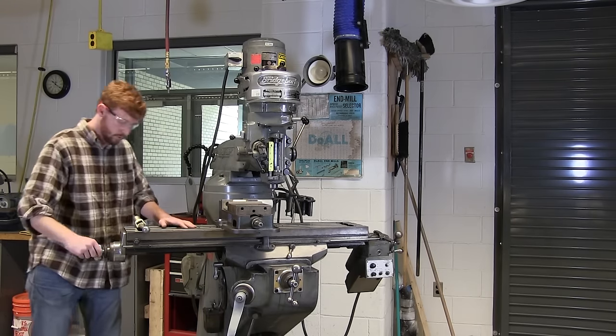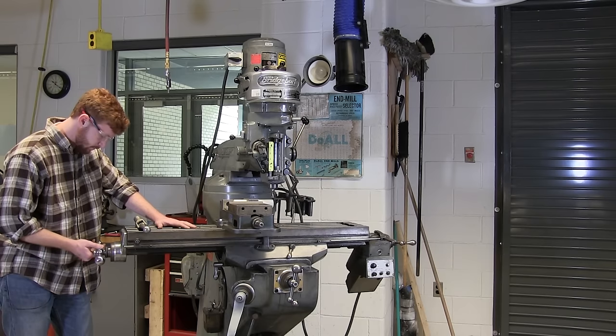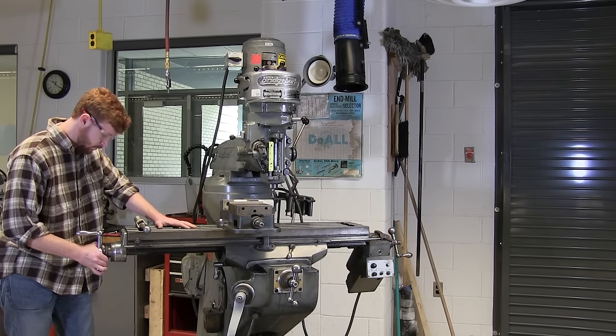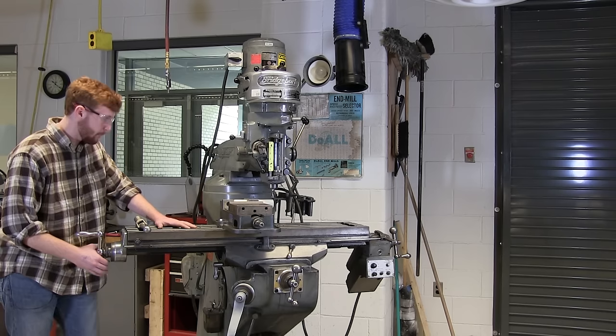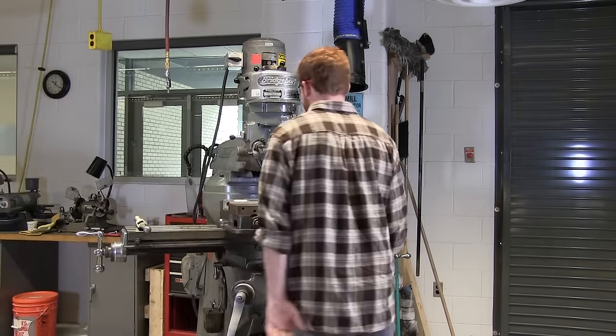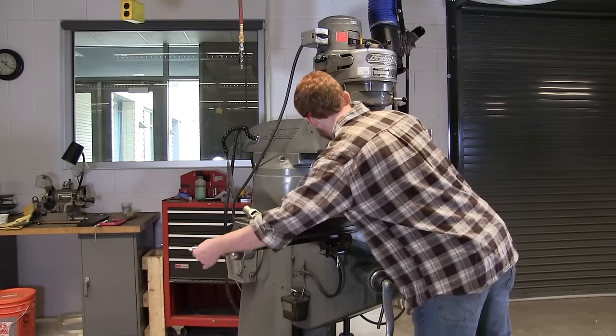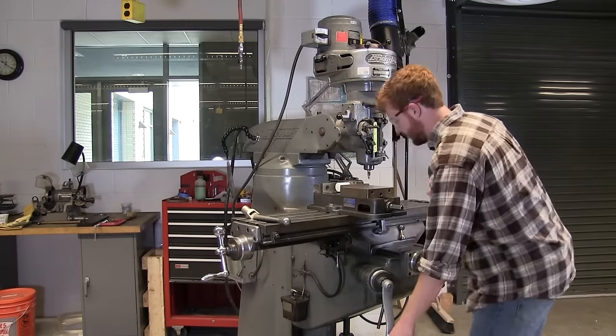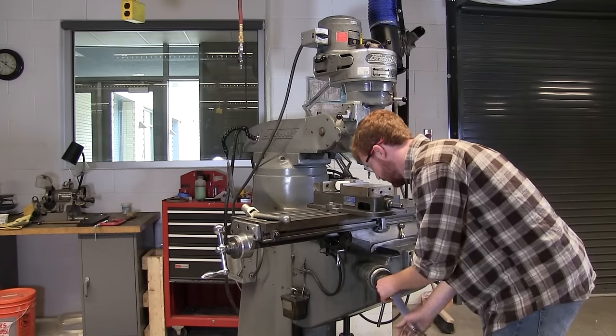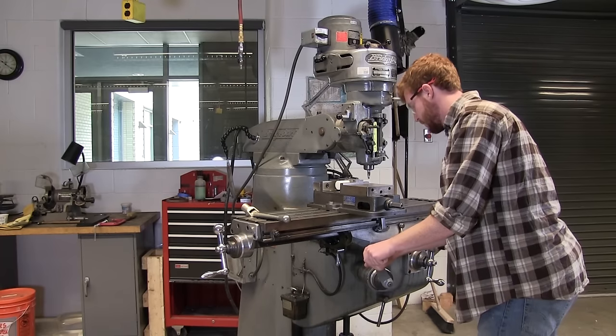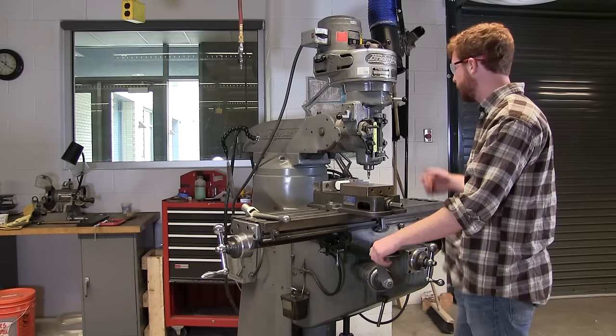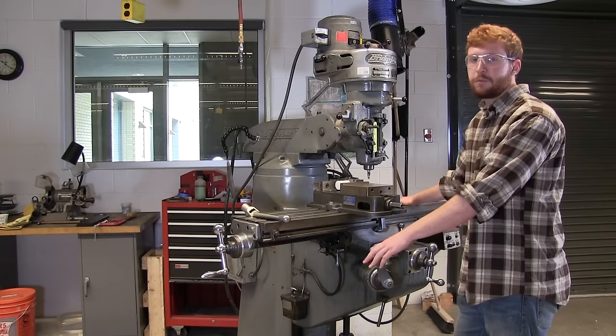So go to my zero. Looks pretty good to me. So that's zeroed. I'll move this a little bit out of the way. Check my Z. And that looks good to me. So I'm happy with my zeros.